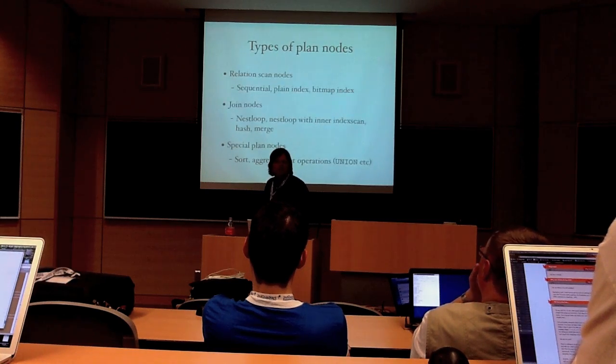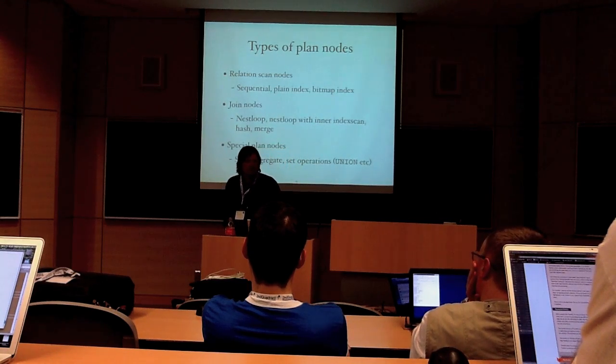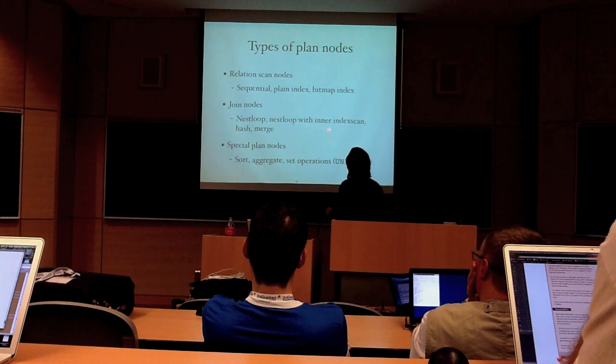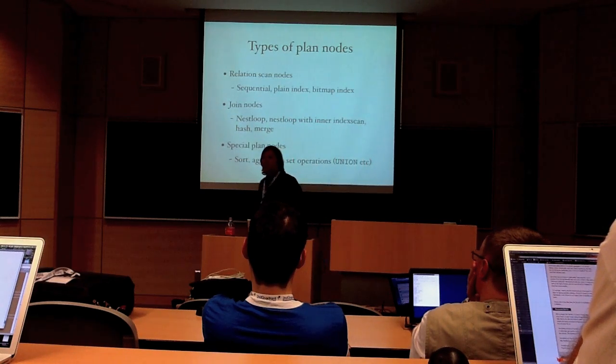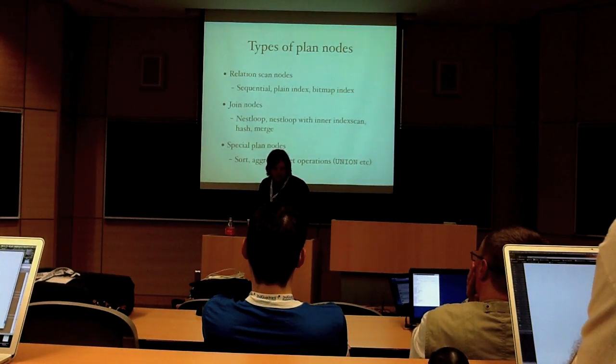So there are a bunch of different types of plan nodes, and here I've listed the most important ones. I'm not going to sit here and read the list to you, but I do want to point out that I listed a nested loop with an index scan as a separate plan type, which may seem a little surprising because the executor certainly doesn't think that. But it turns out that it is quite different for the planner, as we'll see later on.